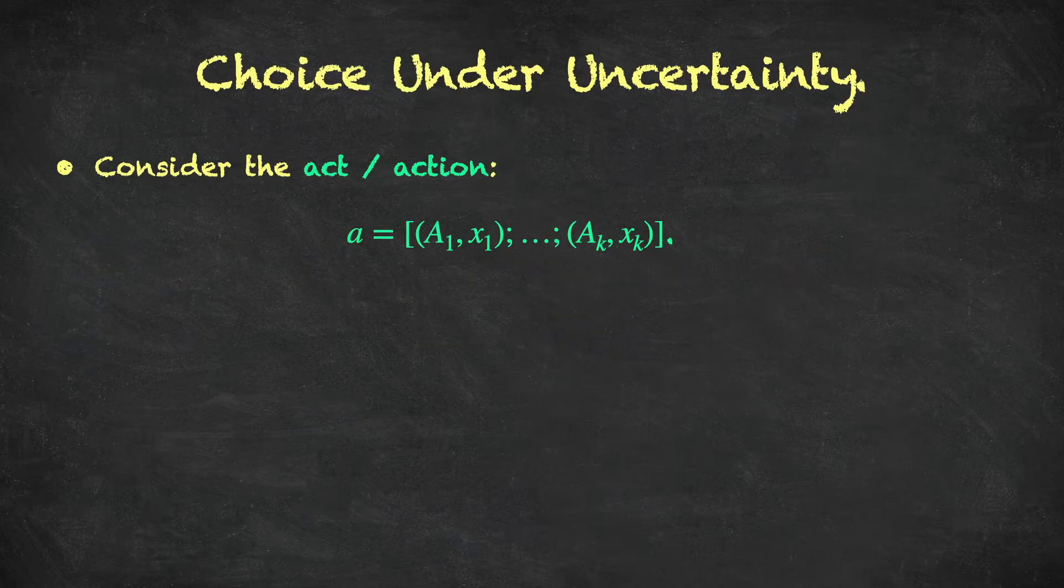Let's just recap the basic framework of choice under uncertainty. So if we consider an act or an action, we've seen this in several lectures before, where an action, lowercase a, is a state-contingent outcome. So if event A1 happens, remember that means the true state of the world belongs to event A1, then under action a, the decision-maker will receive outcome x1, and so on up to event k. If the true state of the world belongs to event k, then under action a,